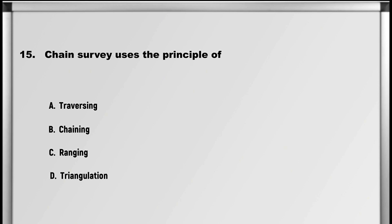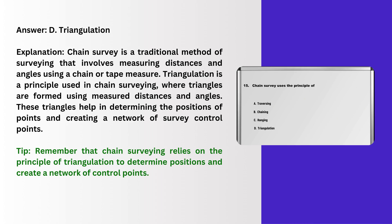Chain survey uses the principle of: A. Traversing, B. Chaining, C. Ranging, D. Triangulation. Answer: D. Triangulation. Explanation: Chain survey is a traditional method of surveying that involves measuring distances and angles using a chain or tape measure. Triangulation is a principle used in chain surveying where triangles are formed using measured distances and angles. These triangles help in determining the positions of points and creating a network of survey control points.